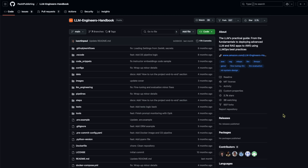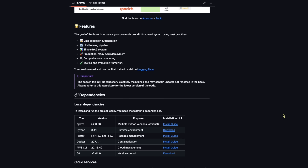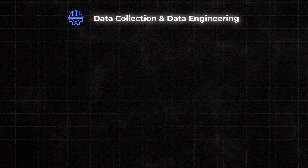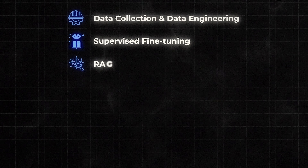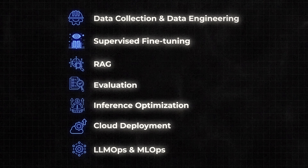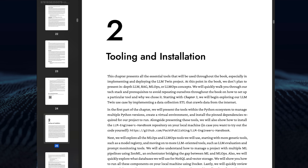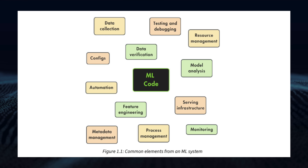Similar to the other two books, it also comes with a GitHub repository which you can access for free without buying the book. This book essentially covers the technical details of an LLM development pipeline, including data collection and data engineering, supervised fine-tuning, retrieval augmented generation pipeline, evaluation, cloud deployment, and LLM Ops. The book is quite light on theory — you wouldn't expect it to explain how transformer architecture works — but it leans more heavily on the technical aspects like tooling, architecture, and implementing each part of the LLM development pipeline.